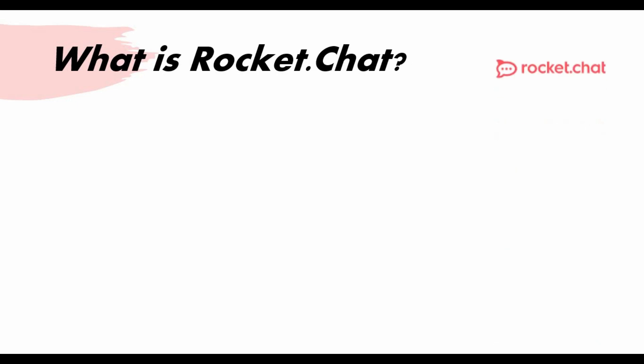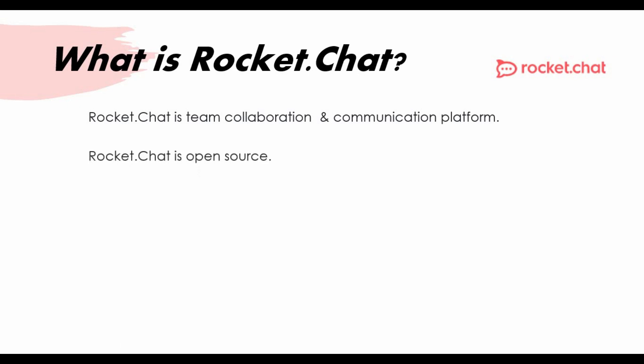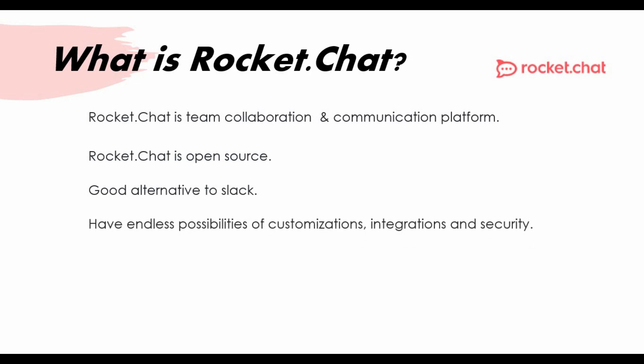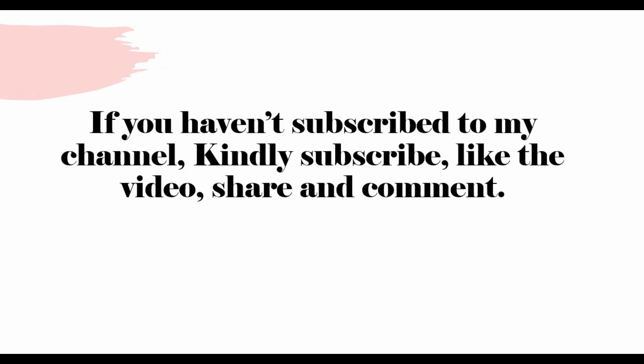If you don't know what Rocket.Chat is, here's some information before we start. Rocket.Chat is a team collaboration and communication platform, similar to Slack. The difference is Rocket.Chat is open source software — a good alternative to Slack. You can set it up in-house using Docker on your own server. The benefit is you have endless possibilities for customization, integration, and security. You can have a self-managed or cloud instance for your enterprise, creating channels and doing communication as an alternative to Slack or MS Teams.